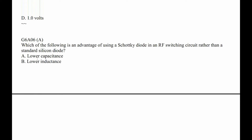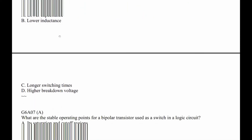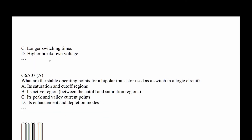G6A06. Which of the following is an advantage of a Schottky diode in an RF switching circuit rather than a silicon diode? Diodes do have capacitance. I don't know if they have inductance — I sort of think not — and while a couple of these look like they could be neat answers, the Schottky diode is good because it has low capacitance, so it doesn't load down the circuit.